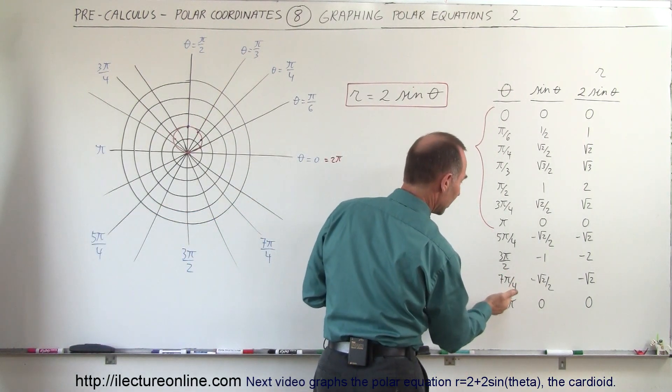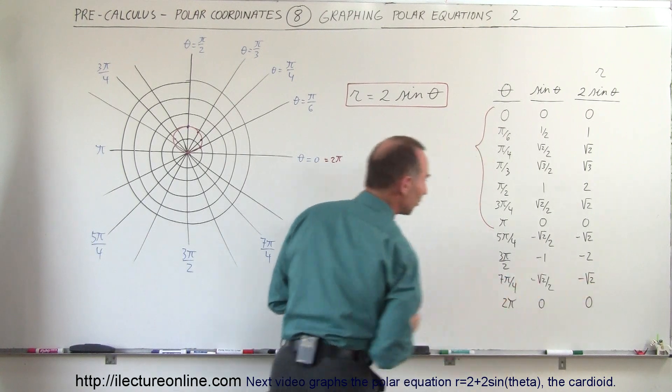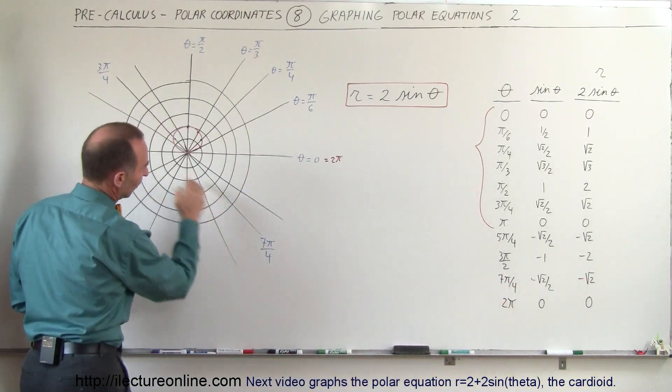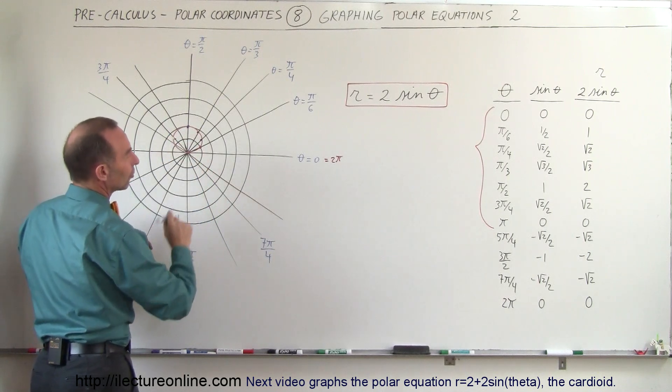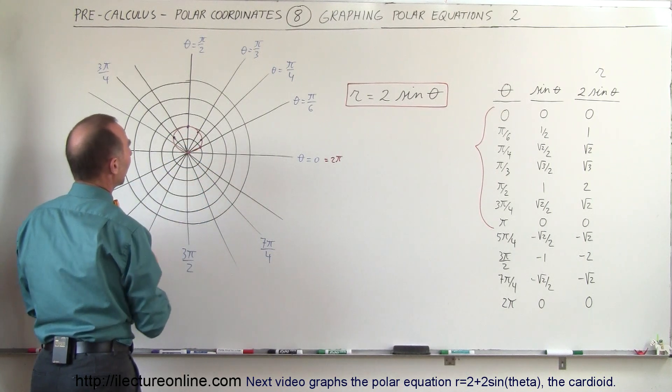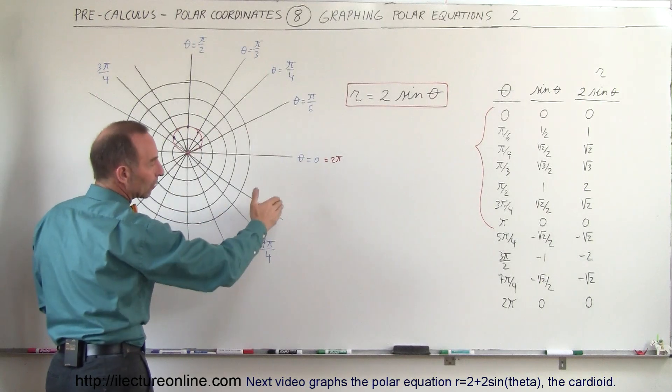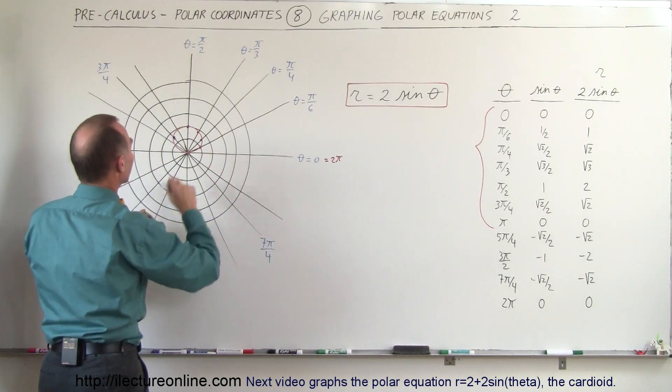Then we come back to 7π over 4. The number is minus the square root of 2. So 7π over 4, when we're in this direction, the number is negative square root of 2, that puts us right there. And finally, when we go all the way around to 2π, the distance is 0 again.